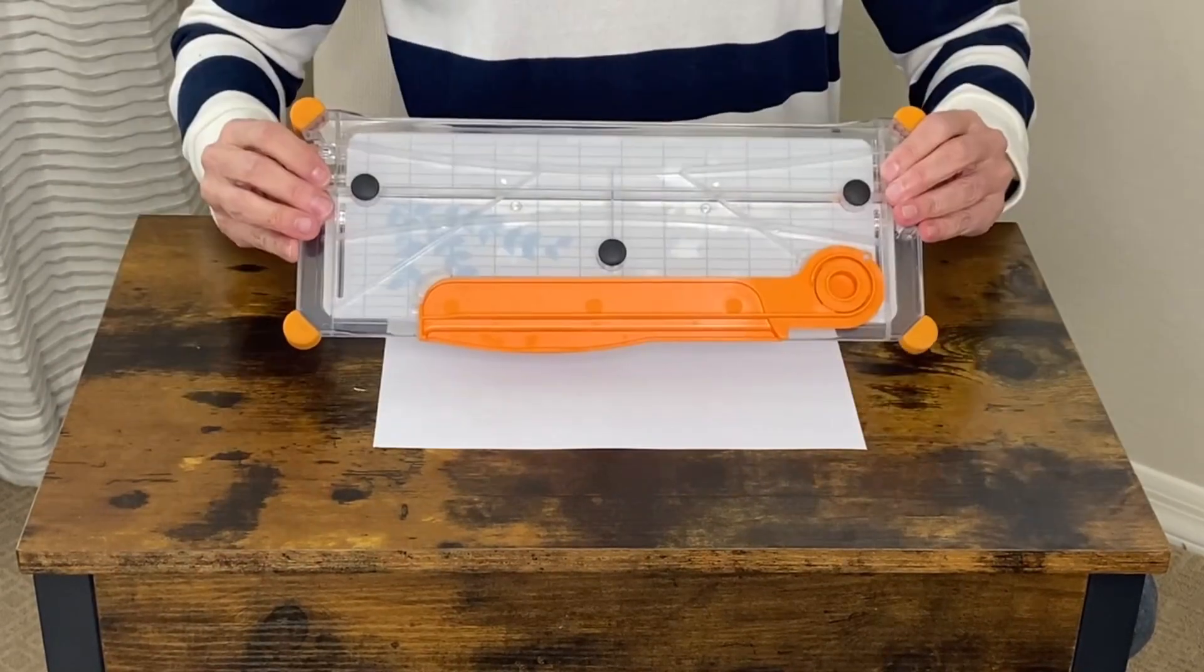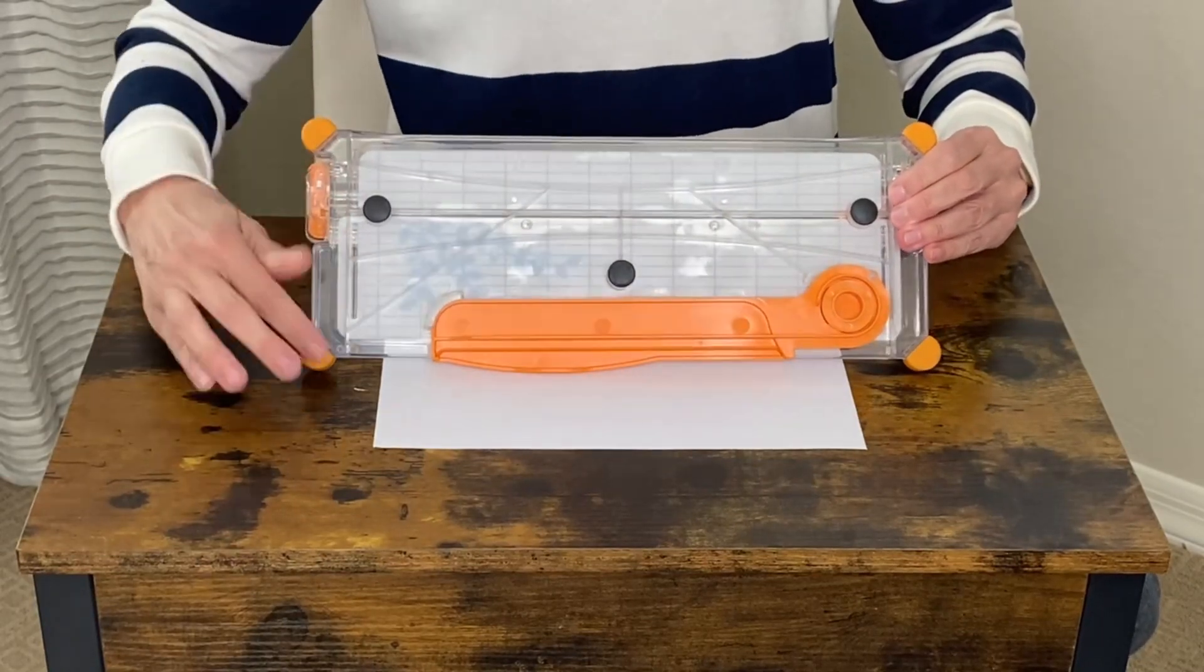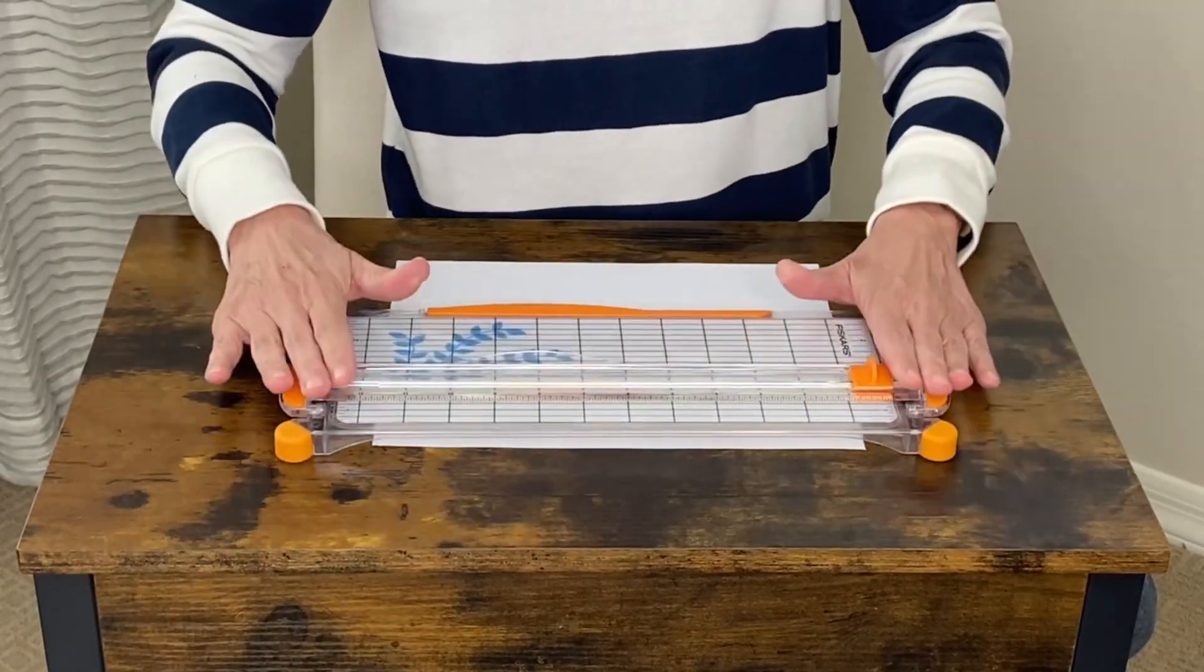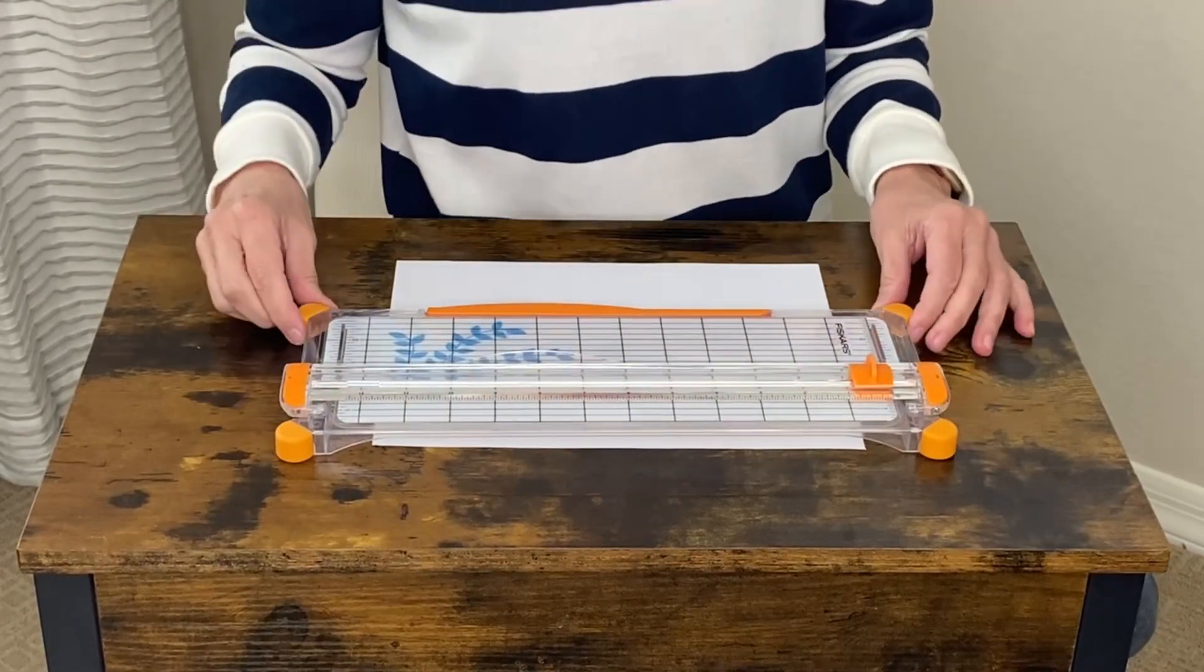The four corners do have rubber soles, so that keeps the cutter very sturdy while you're cutting your paper.